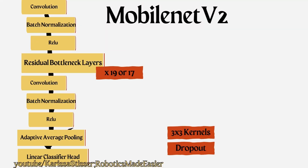So what is the MobileNet V2 algorithm? It's a classification algorithm that was specifically written to help reduce computation and memory for constrained systems, like a mobile phone — hence MobileNet — or in our case, Raspberry Pi.